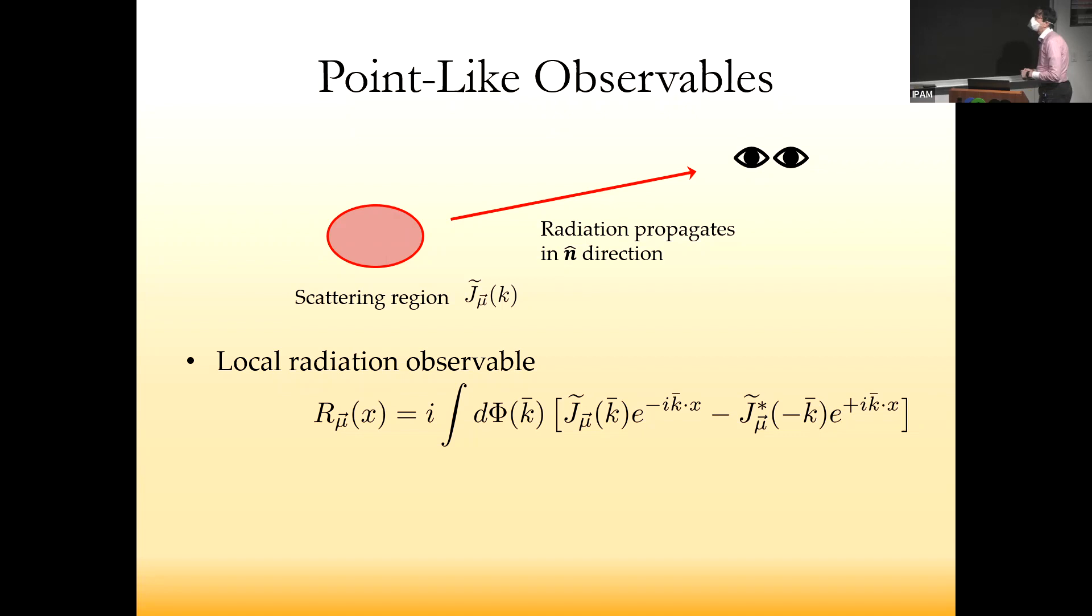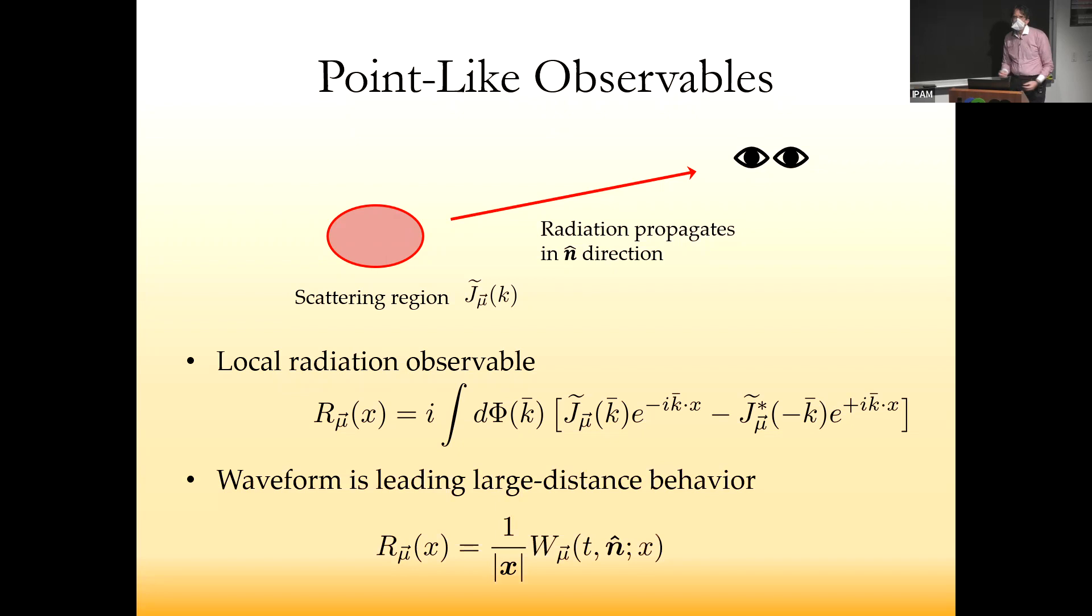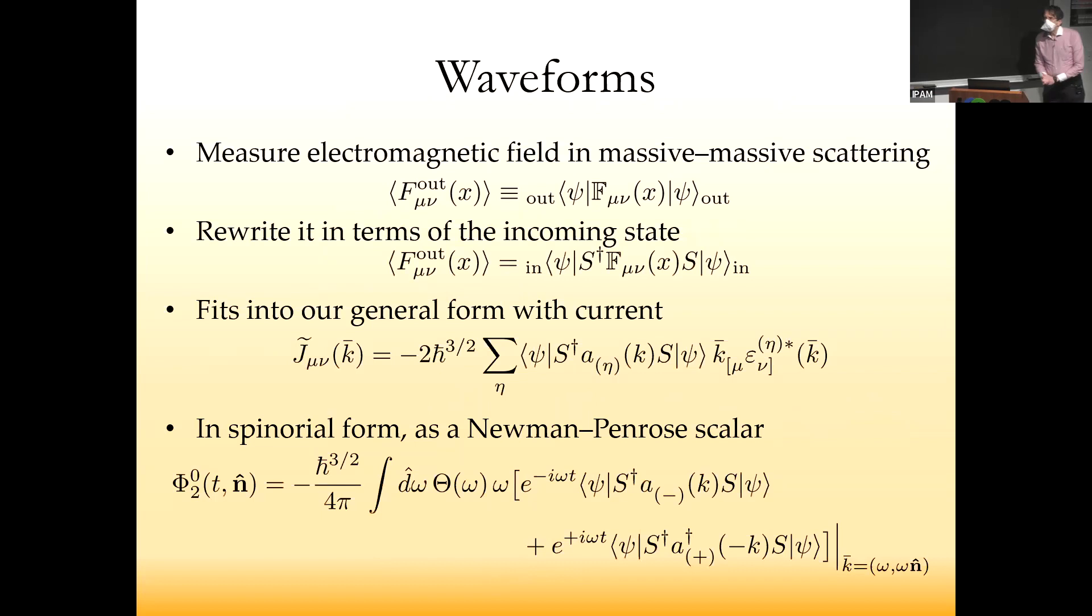What we want to do is think about point-like observables. We're looking at unbound scattering, so we have a scattering region with some interaction that generates radiation. That radiation propagates toward our observer. If it's electromagnetic in the right frequency band, the observer could use a mark-one eyeball, but for gravity you have sophisticated laser interference apparatuses.